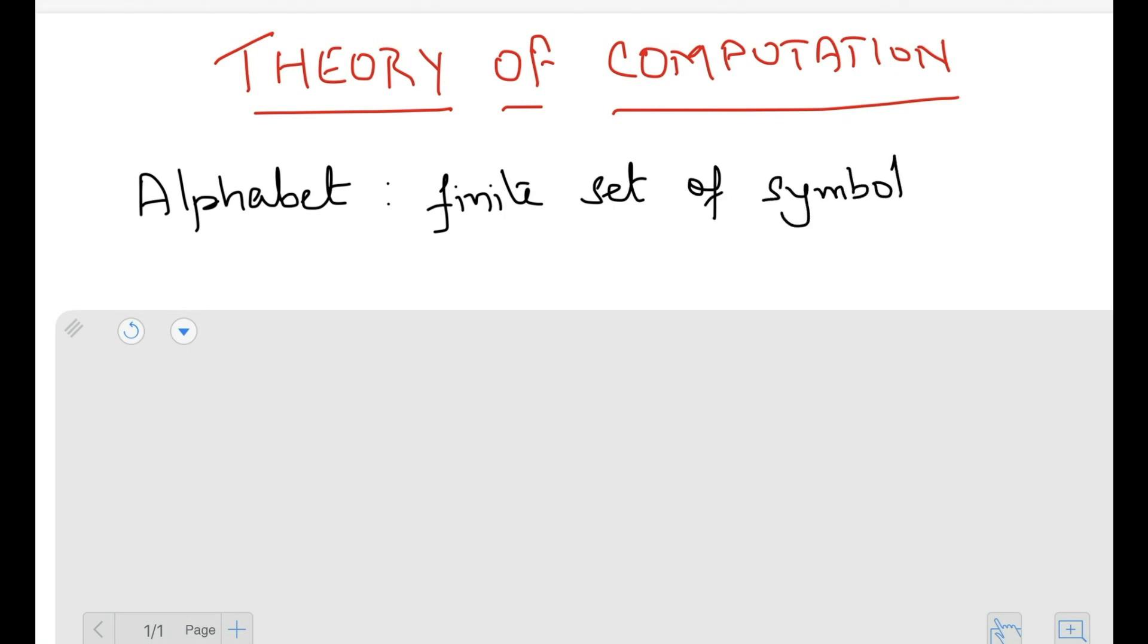And an example of an alphabet could be the Roman alphabet, which is what we use for English, contains a, b, and so on up to z. Another example could be the binary alphabet which contains just 0 and 1. So these are both alphabets and an alphabet is generally denoted by the symbol sigma.